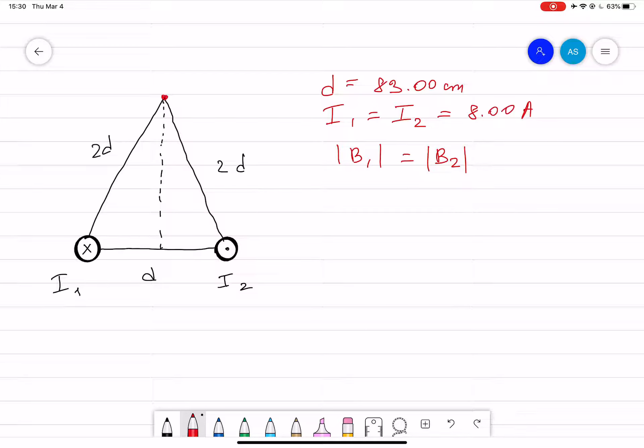Now let's look at current 1. If you use the right-hand rule, then we can see that the magnetic field coming from current 1 at this point will be perpendicular to that distance, and I call this one B1. Now current 2 will also create a magnetic field at a 2d distance, which will be pointing perpendicular again. This will be B2.